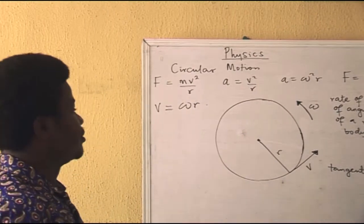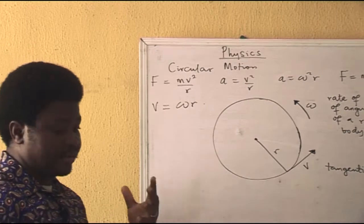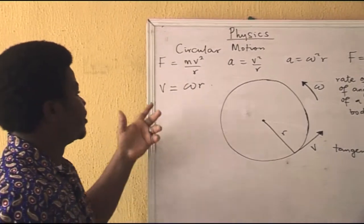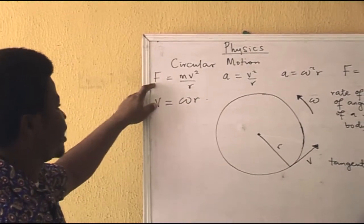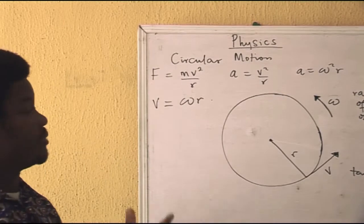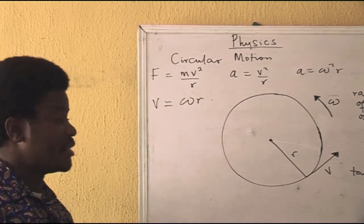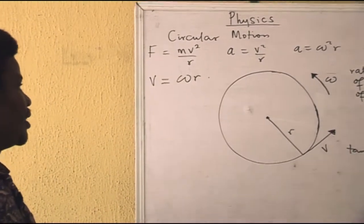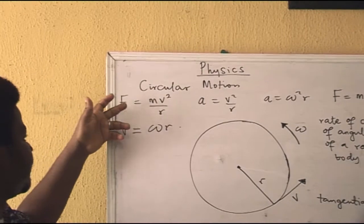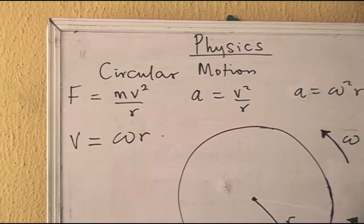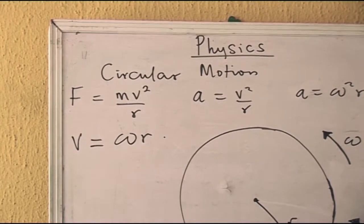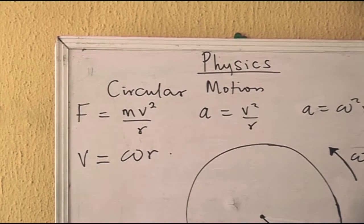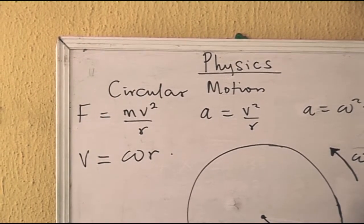Because an object is moving in a circular form, it will not be moving on its own — something must be responsible for that movement. The factor responsible is the centripetal force, denoted as F. Just as linear force is responsible for linear or translational movement, centripetal force is what causes an object to move in a circular manner. Mathematically, centripetal force is expressed as F = mv²/r, which is mass times centripetal acceleration (v²/r), from Newton's second law.